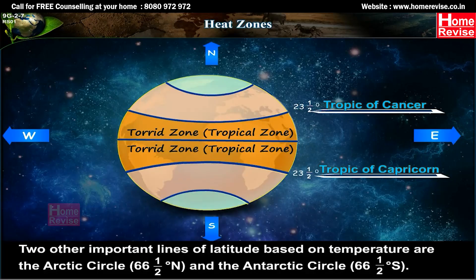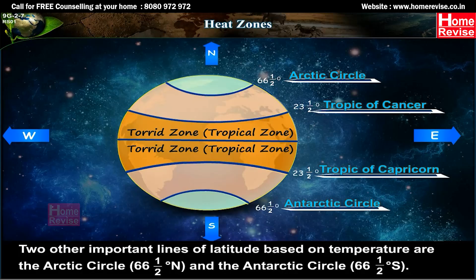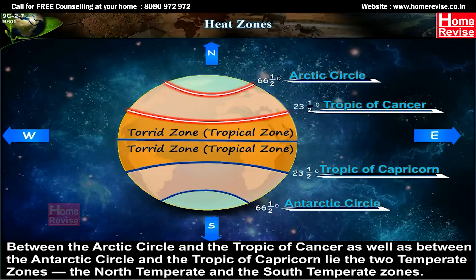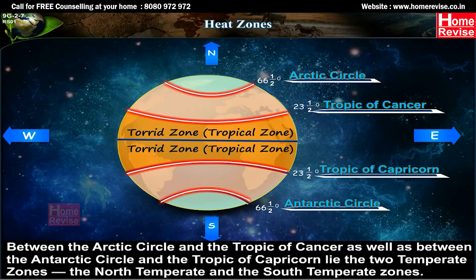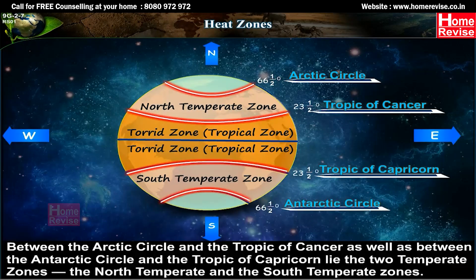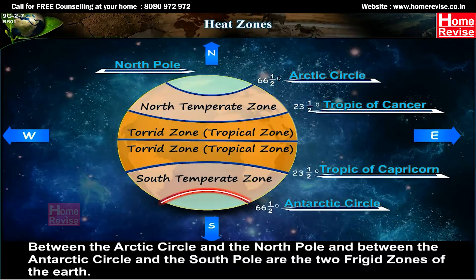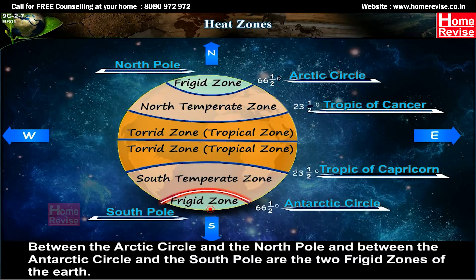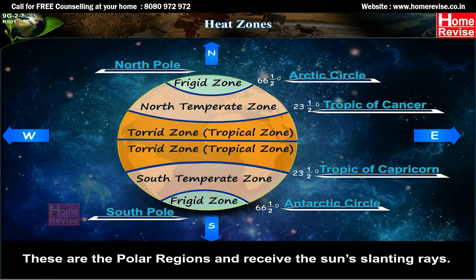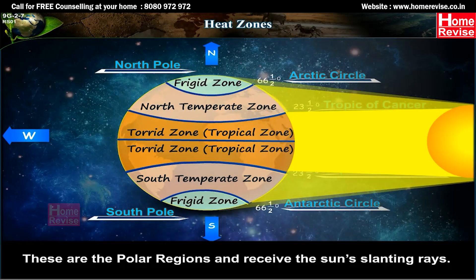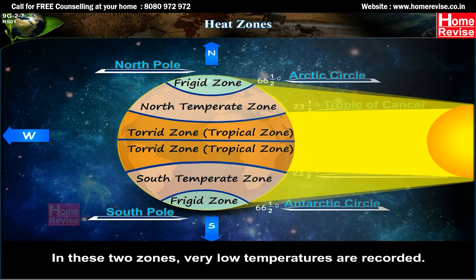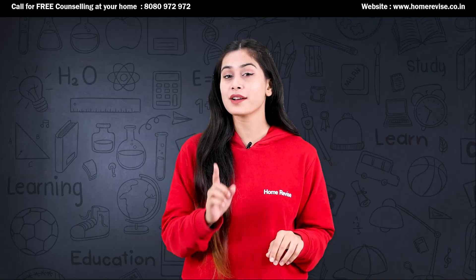Two other important lines of latitude based on temperature are the Arctic Circle (66.5 degrees north) and the Antarctic Circle (66.5 degrees south). Between the Arctic Circle and the Tropic of Cancer lie the two Temperate Zones — the North Temperate and the South Temperate zones. Between the Arctic Circle and the South Pole are the two Frigid Zones, which are the polar regions that receive the sun's slanting rays and record very low temperatures.